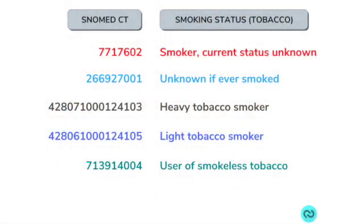To see LOINC and SNOMED CT working together, let's revisit the tobacco smoking status LOINC code and review the corresponding SNOMED CT codes. There are five SNOMED CT codes that can reflect the smoking status of a tobacco user: smoker current status unknown, unknown if ever smoked, heavy tobacco smoker, light tobacco smoker, or user of smokeless tobacco. If an organization slightly alters the name of a data element — for example, labeling 'smoker current status unknown' as 'tobacco smoking status unknown' — that's fine, as long as the SNOMED CT codes align in the back and the right interoperability is in place.